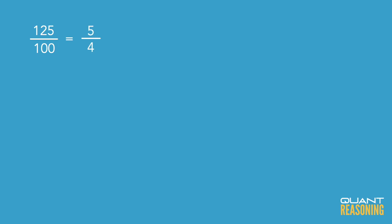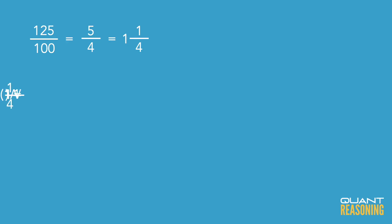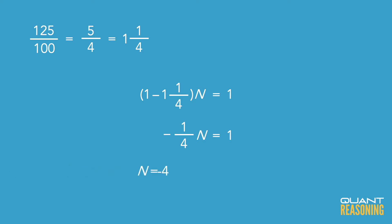If you reduce the fraction 125 over 100, you'll get 5 fourths, or 1 and a quarter. So 1 minus 1 and a quarter gives us negative 1 quarter. We've got negative 1 quarter times n equals 1. To find the value of n, multiply both sides by negative 4, and we get n equals negative 4. That's the answer.